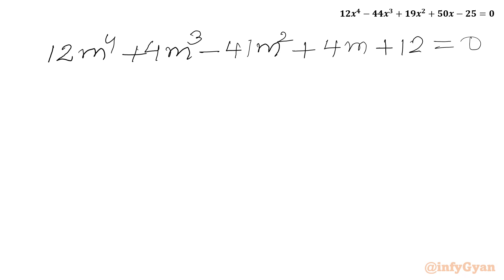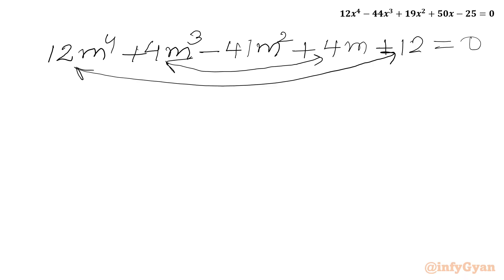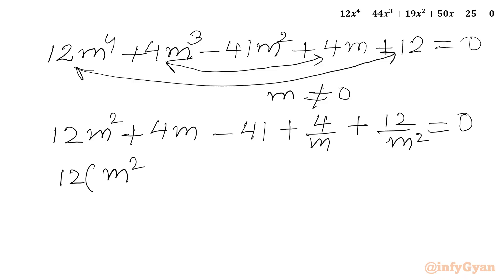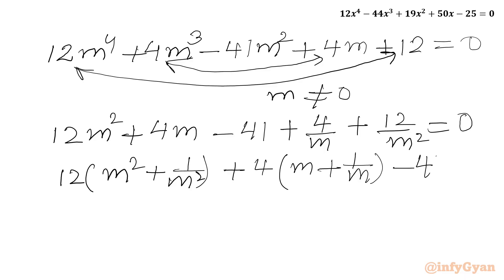Now we have to solve this quartic equation. It is a reciprocal equation — we can see the coefficients 12 and 12, and 4 and 4 are symmetric, and m cannot equal 0. So I will divide our equation by m² on both sides. We get 12m² + 4m − 41 + 4/m + 12/m² = 0. Now I will club the first and last terms together with 12 common, giving 12(m² + 1/m²), then 4 common giving 4(m + 1/m), then minus 41 equals 0.